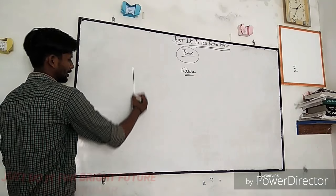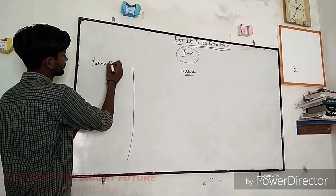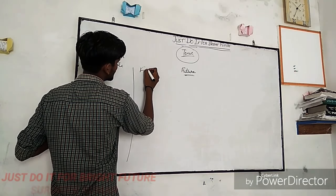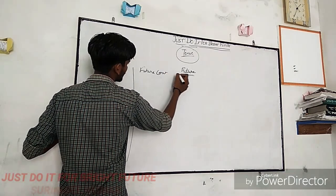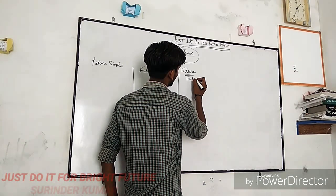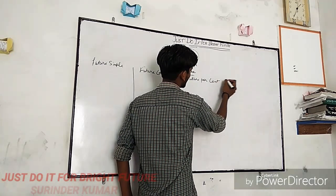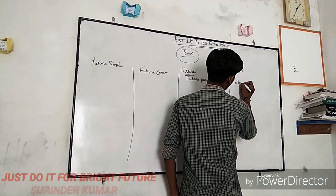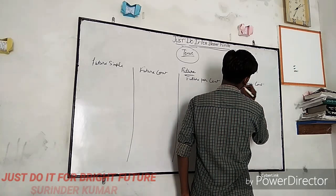The future tense is also divided into four parts, which are: future simple, future continuous, future perfect, and future perfect continuous.